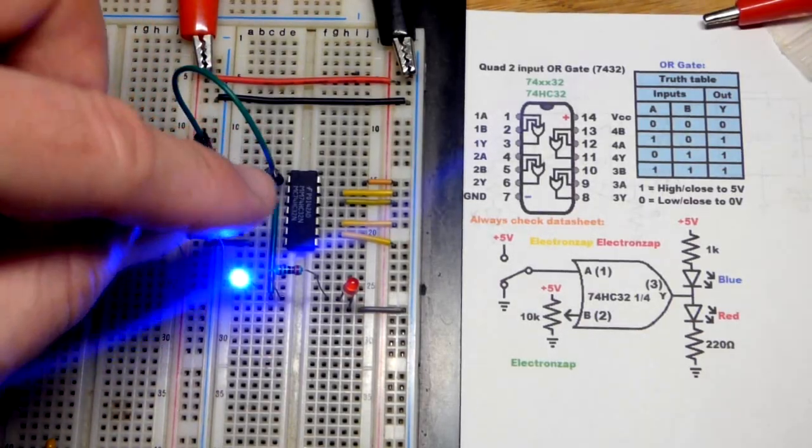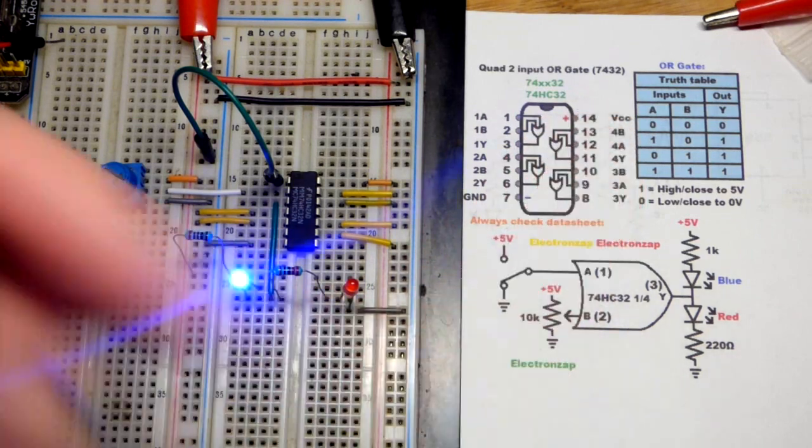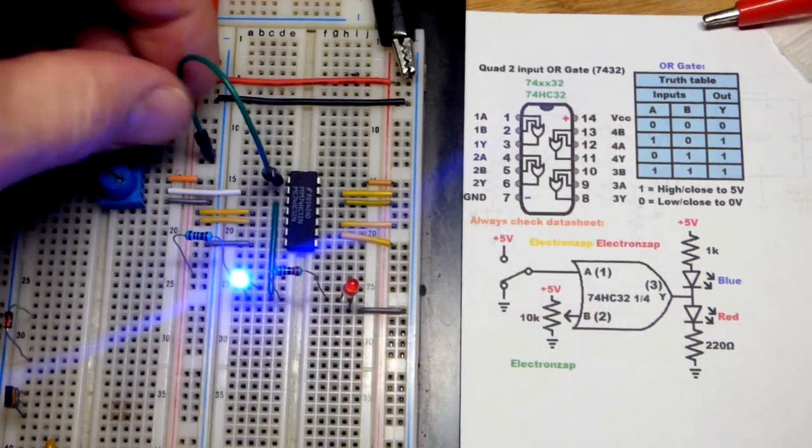So now in this video we're going to look at the 7432 integrated circuit. Actually I'm using the 74HC32, the high speed CMOS version.